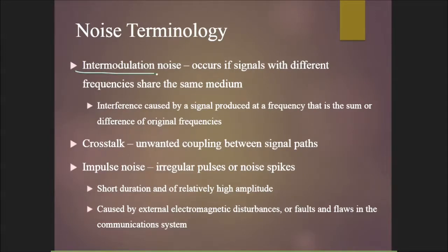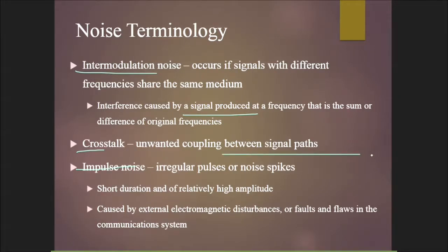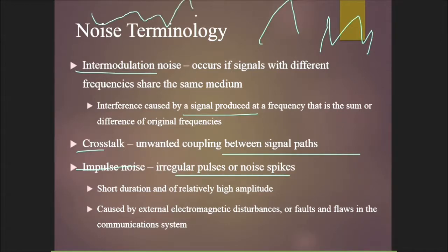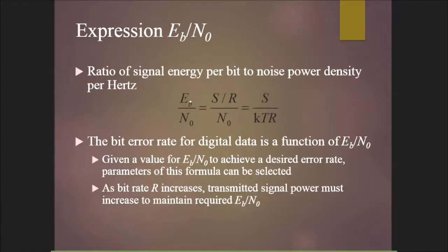Other noise types include: intermodulation noise, which occurs when signals of different frequencies share the same medium, producing interference at frequencies that are sums or differences of the original frequencies; crosstalk, which is unwanted coupling between signal paths; and impulse noise, which consists of irregular pulses or noise spikes of short duration and relatively high amplitude, caused by external electromagnetic disturbances or faults in the communication system.